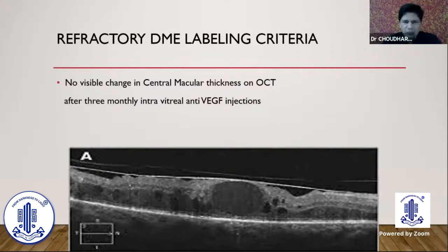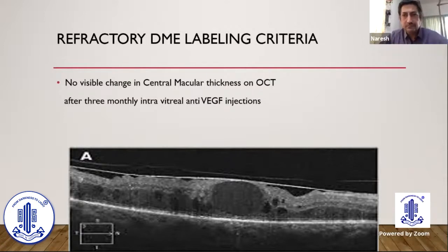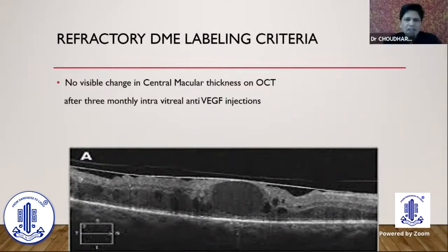But we are not always so lucky. Sometimes we get cases where the patient frustrates us — the patient himself is unlucky — and all our anti-VEGF treatments don't give any desired response. We can define refractory DME as no visible change in central macular thickness on OCT after three monthly consecutive intravitreal anti-VEGF injections.